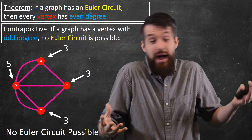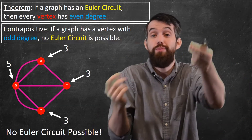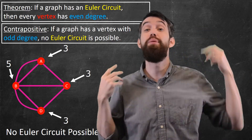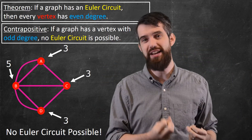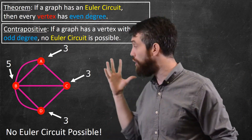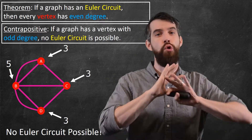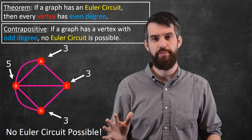Nor is there an Euler path. Two of the odd vertices could serve as your starting and finishing endpoints, but all the rest would have had to be even — and they're all odd here. So no Euler paths and no Euler circuits.